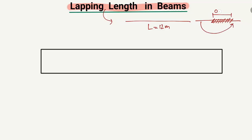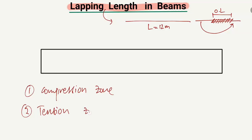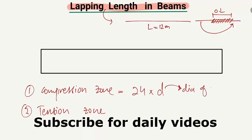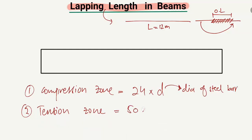This is known as the overlapping length of the bar. There are two different criteria: one is for the compression zone and one is for the tension zone. For the compression zone, the overlapping length formula is 24 × D, where D is the diameter of the steel bar. For the tension zone, the formula is 50 × D.